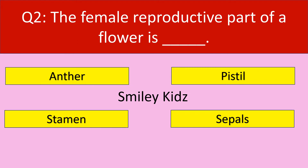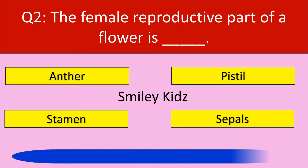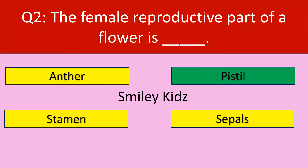Question number 2. The female reproductive part of a flower is. Options are: anther, pistil, stamen, sepals. Your time starts now. The correct answer is pistil. Pistil is the female reproductive part of a flower.